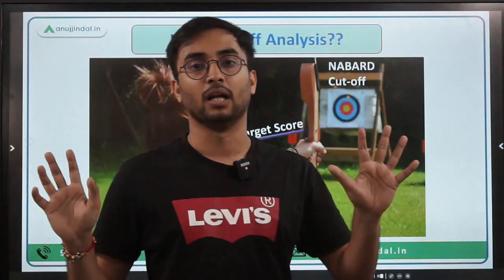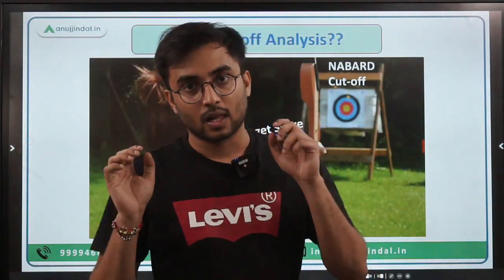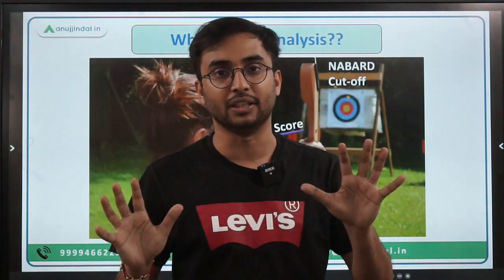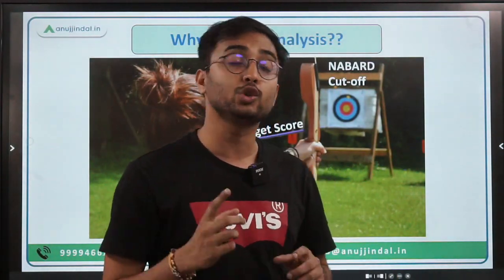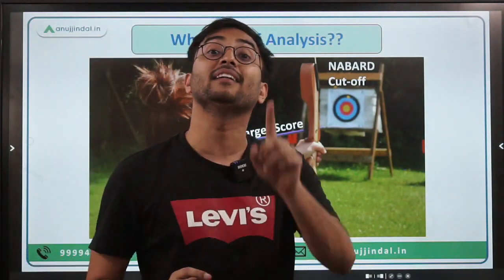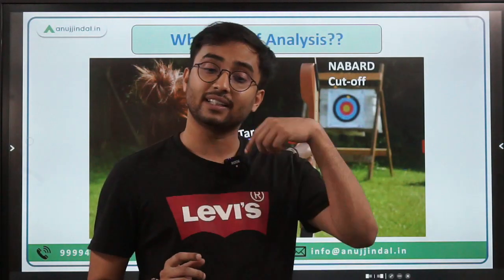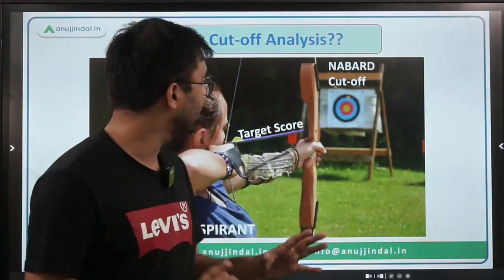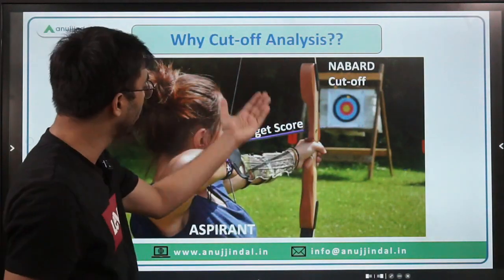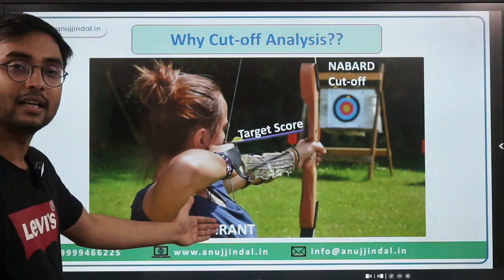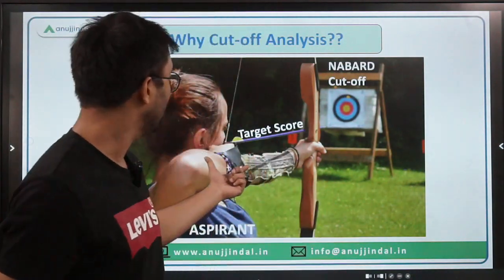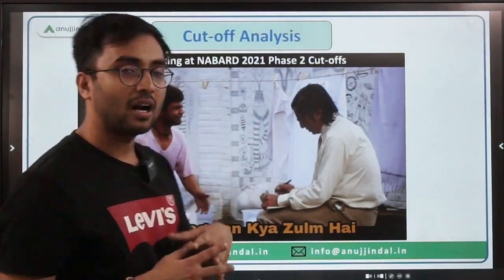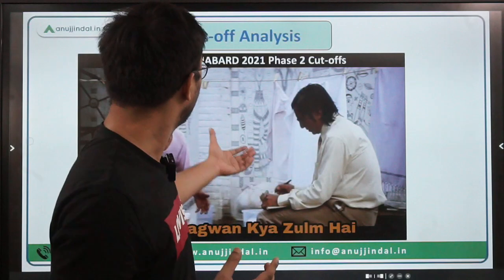For example, take the analogy of Usain Bolt who ran 100 meters in 9.52 seconds. If a person wants to break that world record, then their target should not be 9.52 seconds but rather 9 seconds. When the target score is 9 seconds, then definitely they could get close to breaking the record. Similarly, if you know the cutoff number, then from that cutoff you can identify your target score, and then that aspirant can definitely walk towards being an officer by having their name in the finals list. So that is why today we are discussing cutoff analysis.